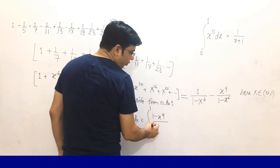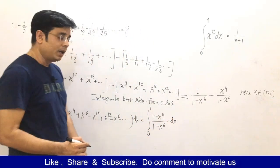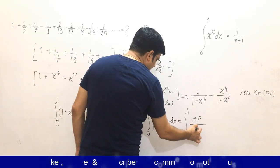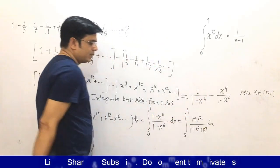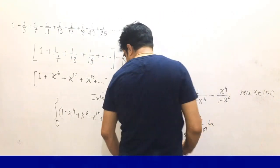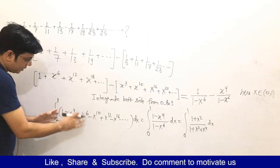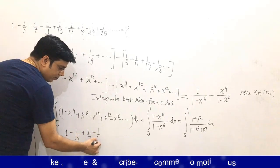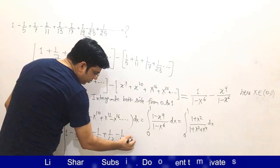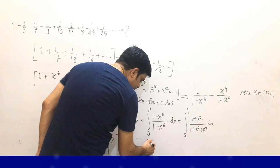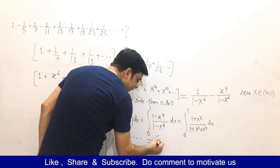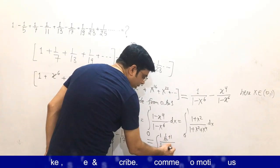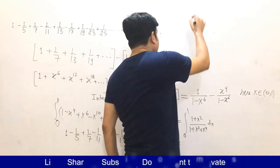Factorizing, we can cancel common factors and the remaining integrand becomes (1 + x²) divided by (1 + x² + x⁴) dx. The integration of 1 gives 1, and the integration of x⁴ gives 1/5, so the series 1 − 1/5 + 1/7 − 1/11 + 1/13 − ... equals this integral. Dividing numerator and denominator by x², we can write it as (1/x² + 1) divided by (1/x² + 1 + x²) dx.